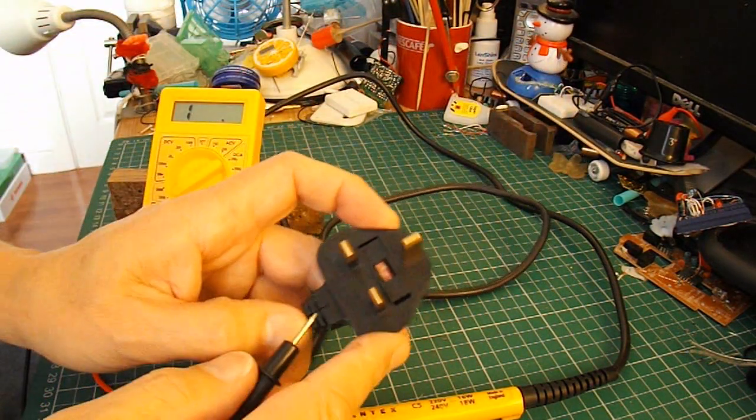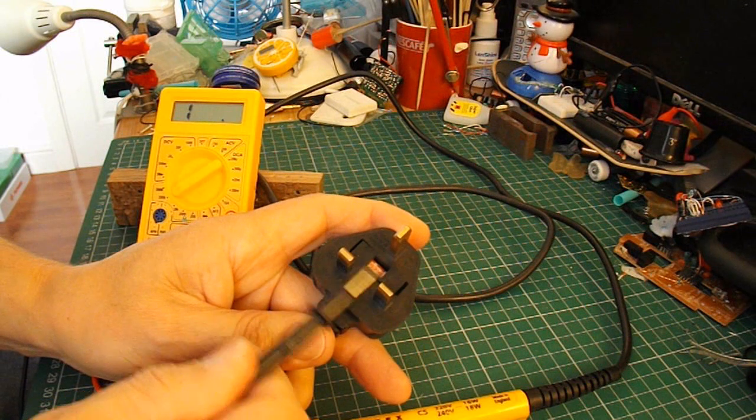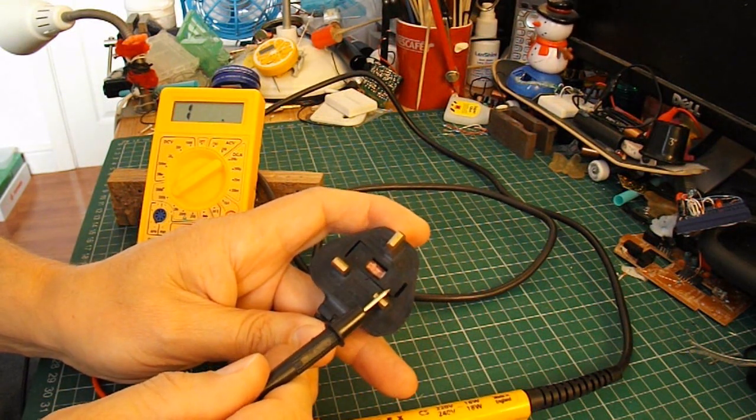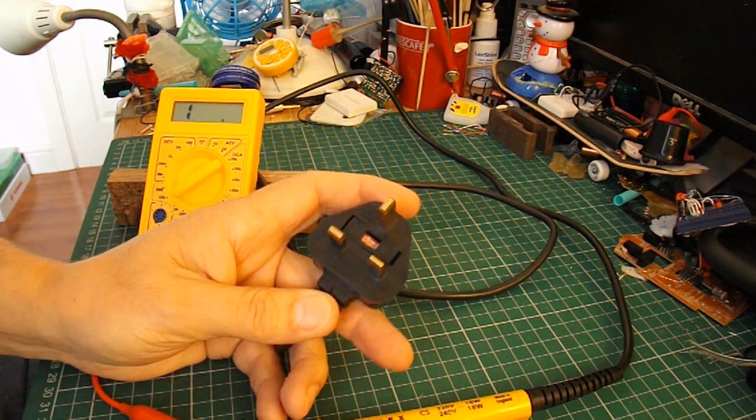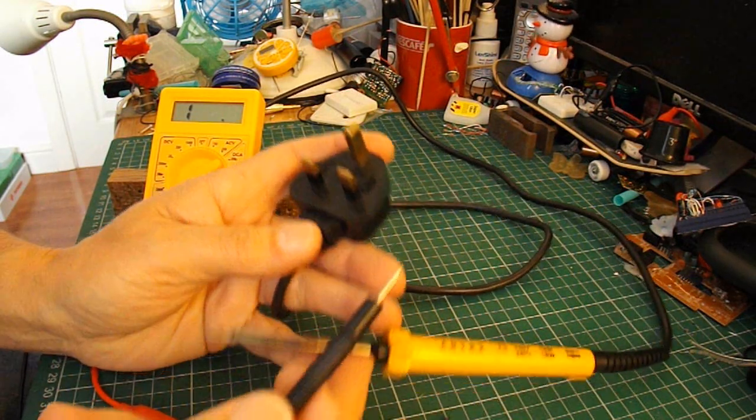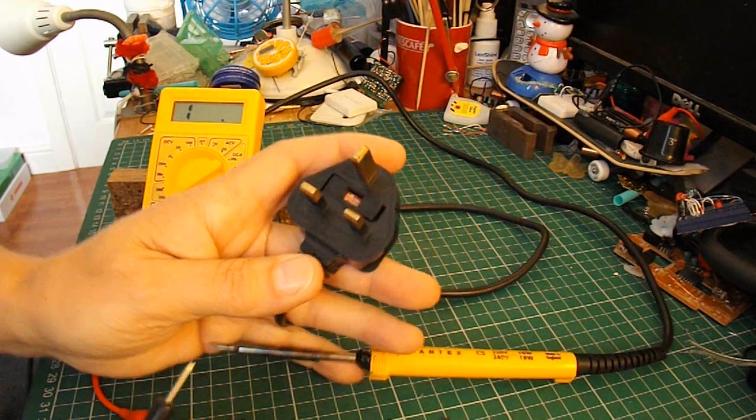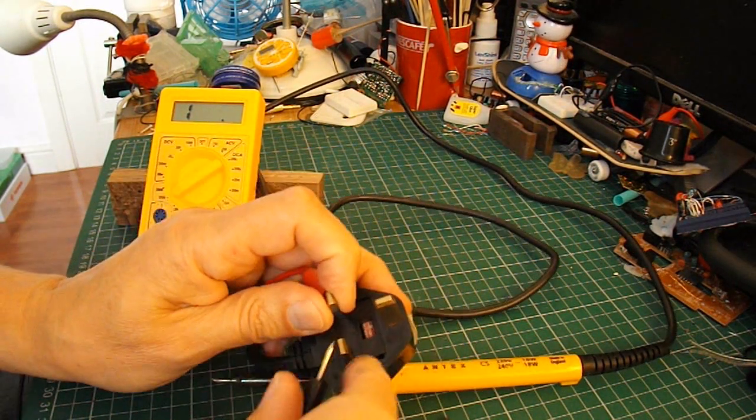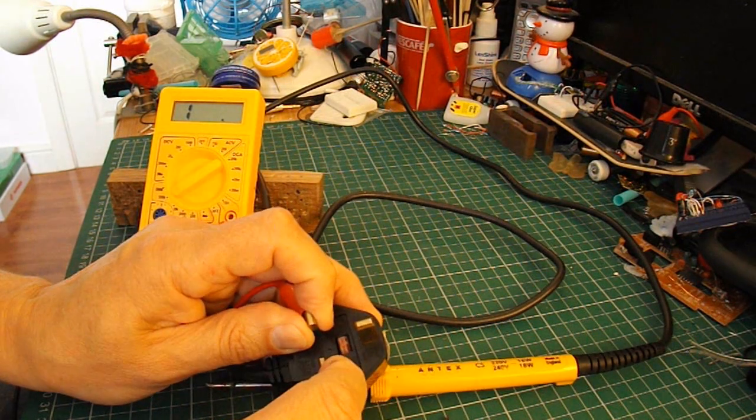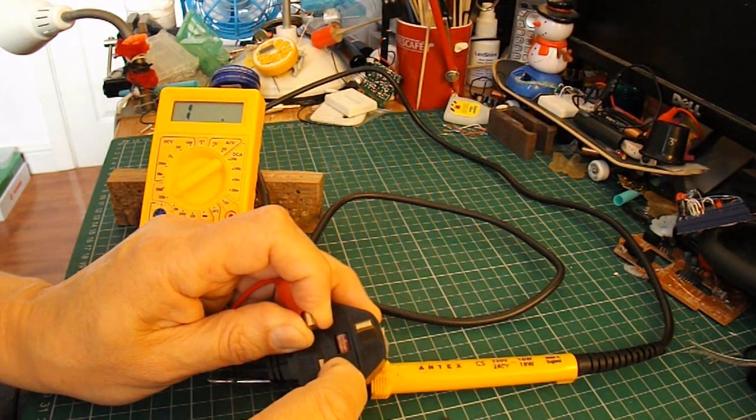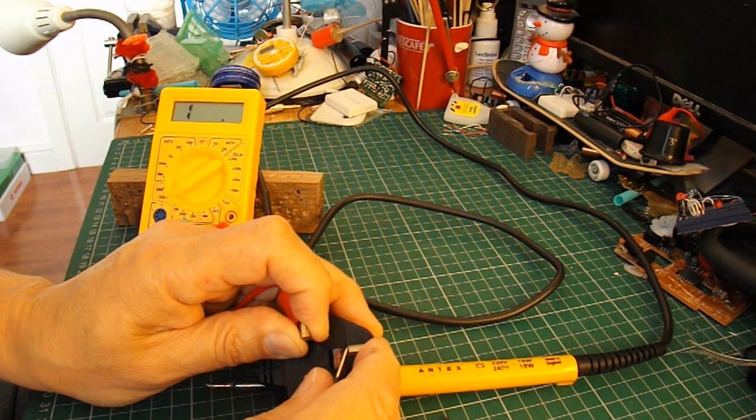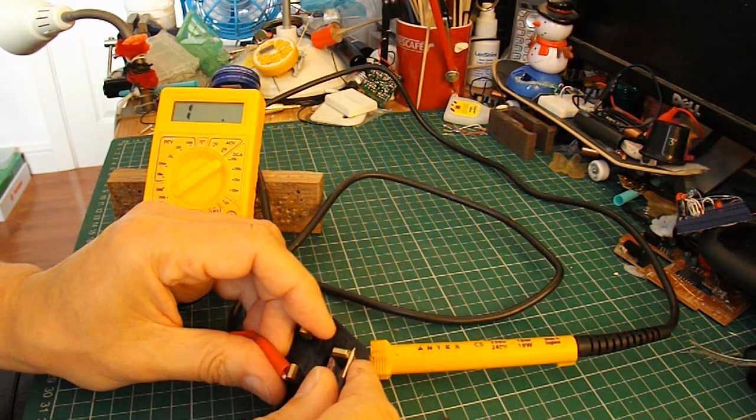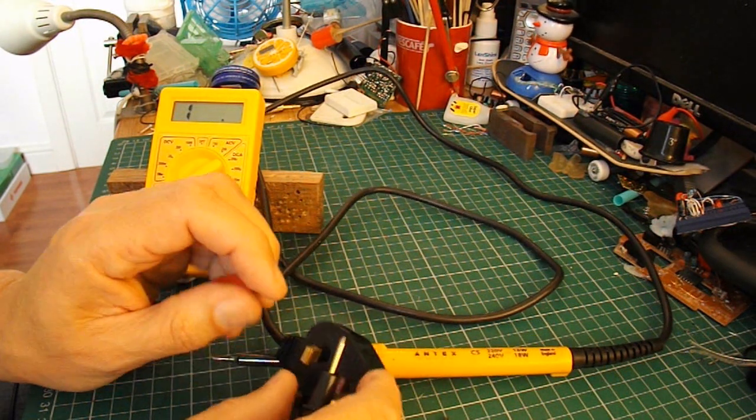So next thing we should be able to do is measure from these two pins, the live and the neutral as we call them. And we should be able to see the heater element. We should see the resistance of it. So going on there and we've got nothing. Just check there's nothing going to the earth wire either. There shouldn't be, but if something's gone dramatically wrong there could be. So nothing.